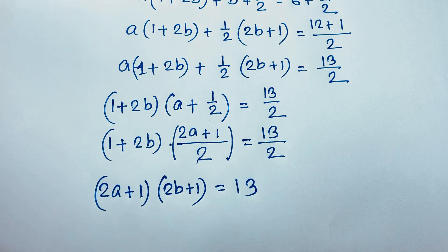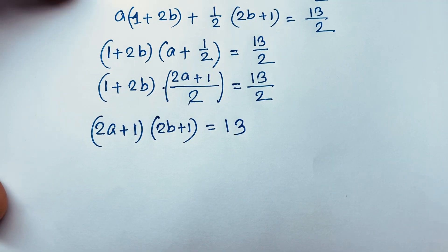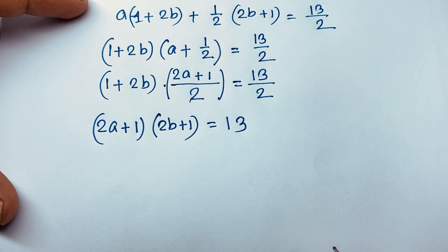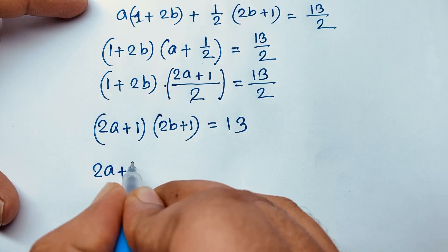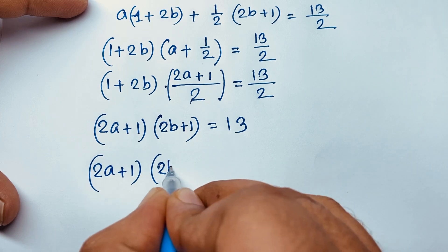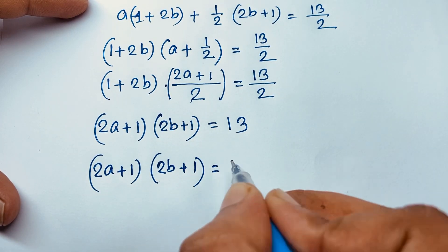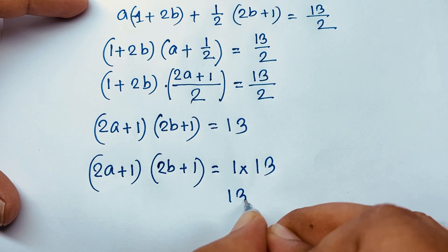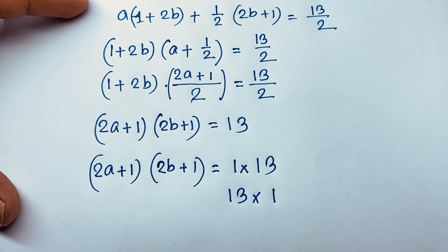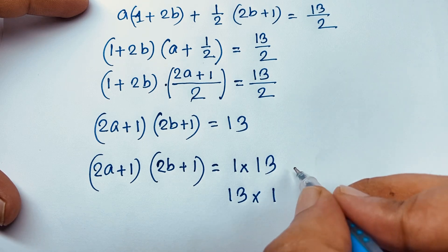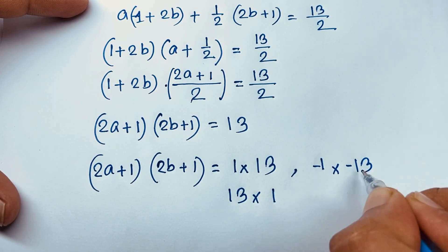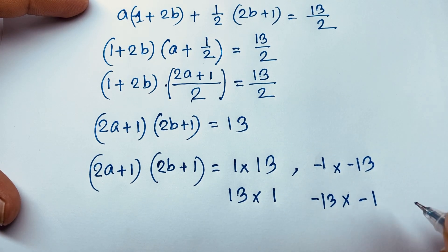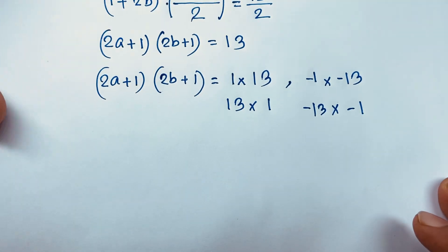Remember that a and b are integers, so (2a + 1)(2b + 1) = 13. The factor pairs of 13 are: 1 × 13, or 13 × 1, or (-1) × (-13), or (-13) × (-1). So we find four cases.